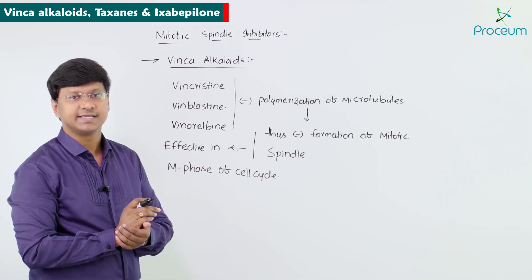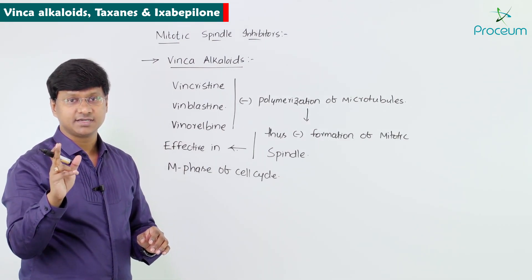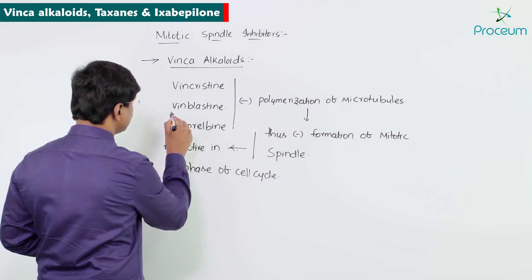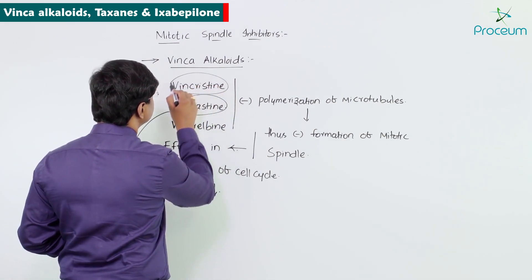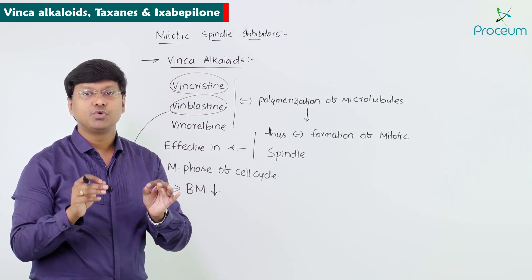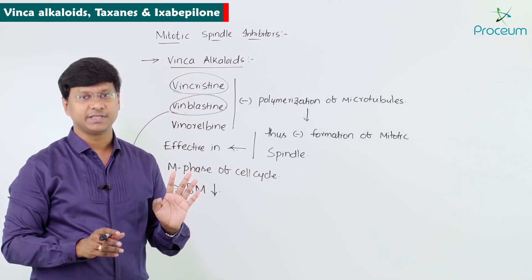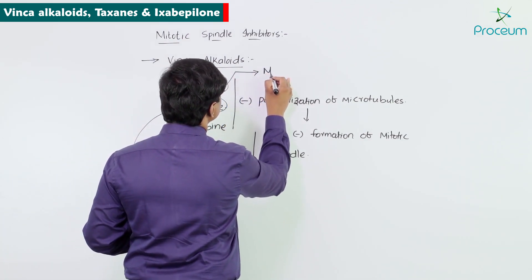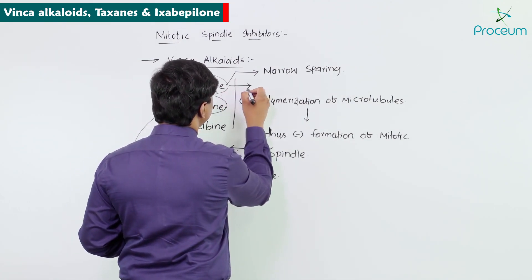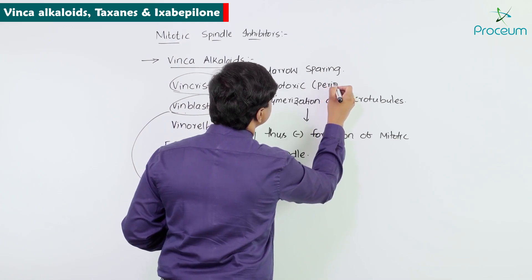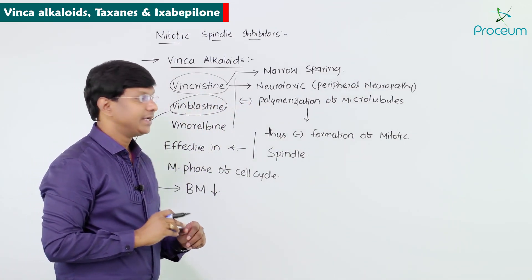Among vincristine, vinblastine, and vinorelbine: vinblastine causes bone marrow suppression, whereas vincristine is bone marrow sparing but is neurotoxic — it causes peripheral neuropathy.